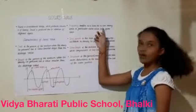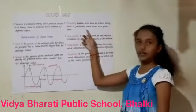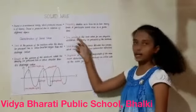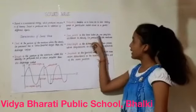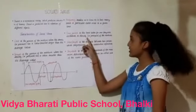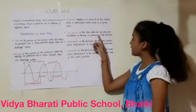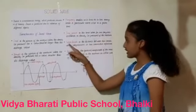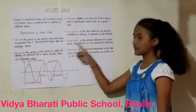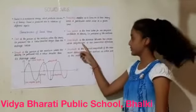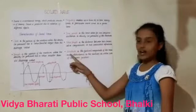Frequency enables us to know as to how many times a particular event occurs in a given time. Time period is the time taken for one complete oscillation in density or pressure of the medium. Wavelength is the distance between two consecutive compressions or two consecutive refractions.